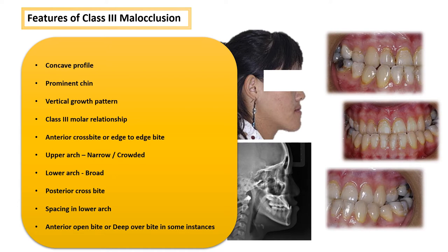The features of Class 3 malocclusion include a concave profile and a prominent chin, which is easily noticeable. The patient exhibits a vertical growth pattern, a Class 3 molar relationship, anterior crossbite, or edge-to-edge bite. The upper arch can be narrow or crowded and the lower arch can be broad. There may be posterior crossbite to varying degrees, spacing in the lower arch, and anterior open bite or deep bite.